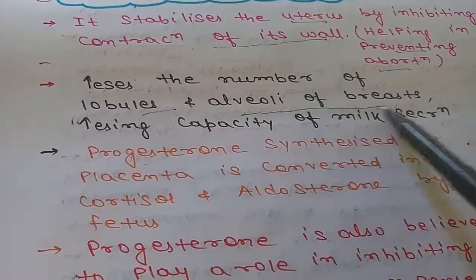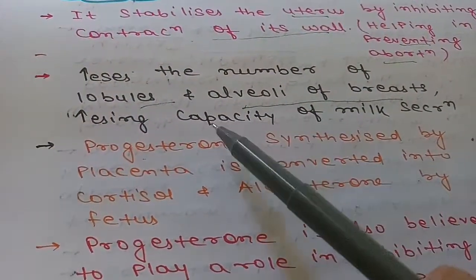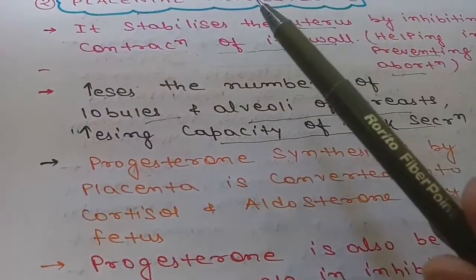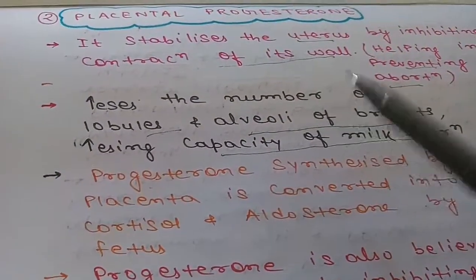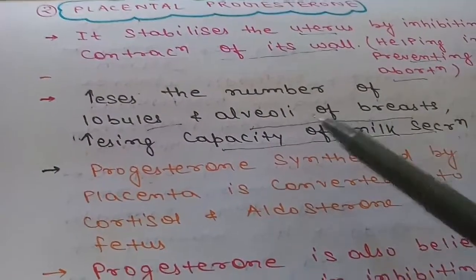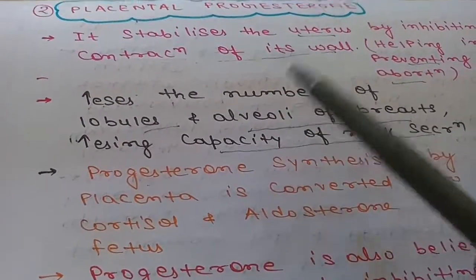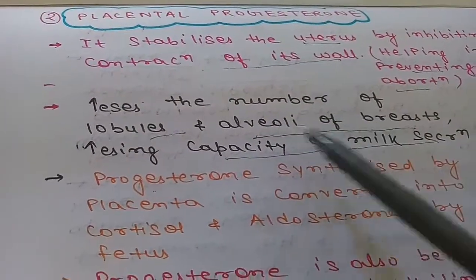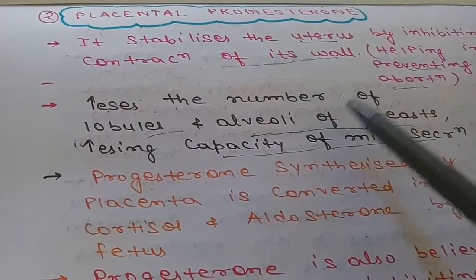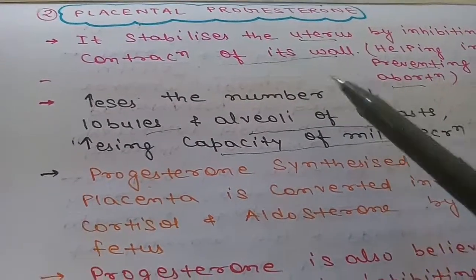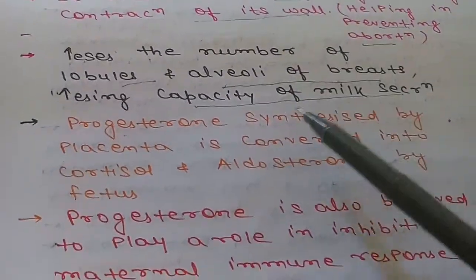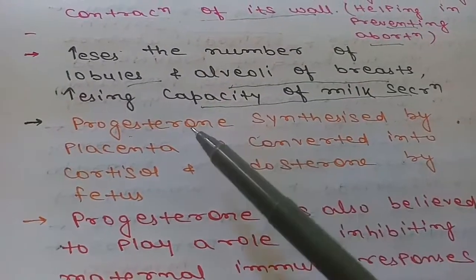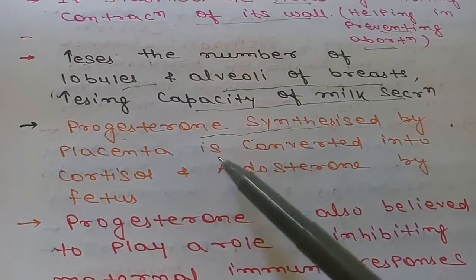The second function is that it increases the number of lobules and alveoli of the breast, so the milk secretion capacity increases. It helps in the growth of the breast by increasing the number of alveoli and lobules, whereas estrogen helps in breast development by increasing the length of the ducts.